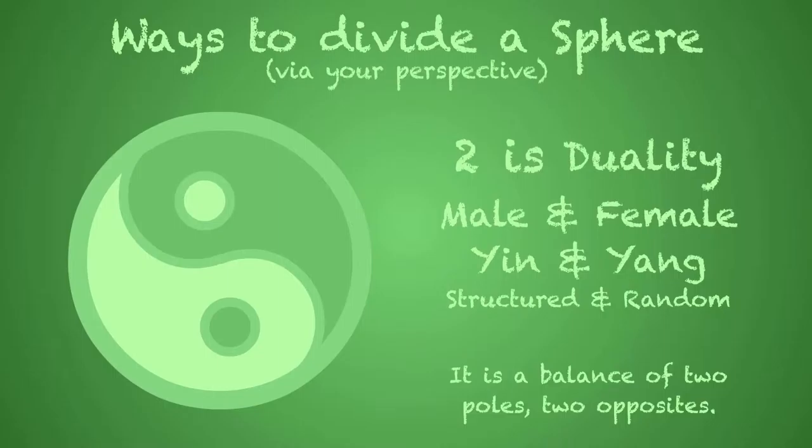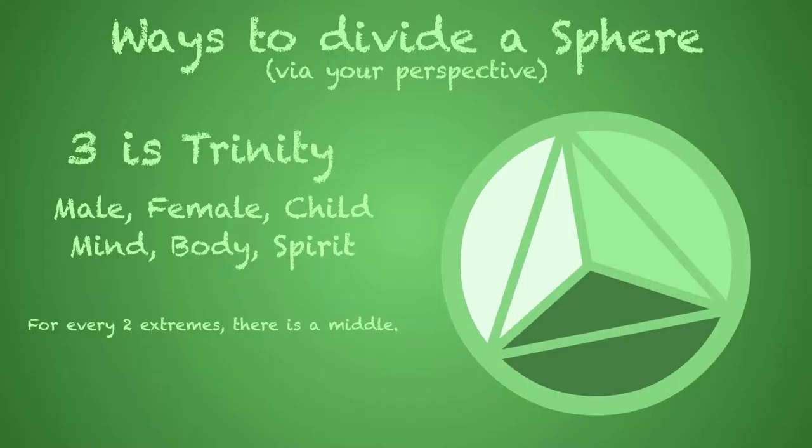If you look through two, you see duality. You're looking at the male and the female of reality, the structured and the creative and inspiration. If you look through three, you see a trinity — mind, body, spirit; male, female, child; up, down, middle; black, white, gray — or even little things like 111 or 333 on your clock.